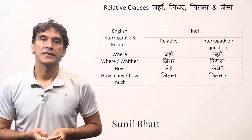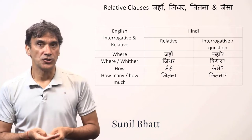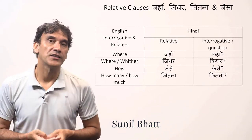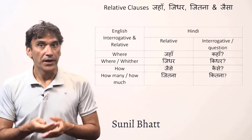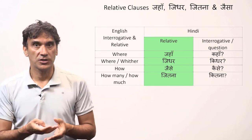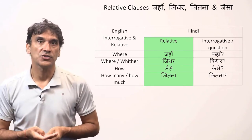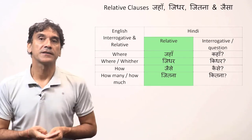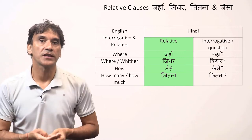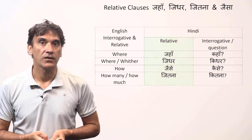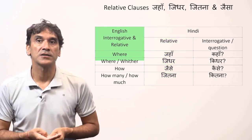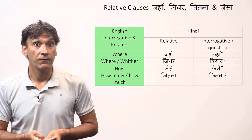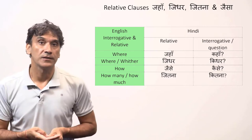Earlier we learned the relative clauses with jo, jis, jinn, and jab. Now we will learn jaha, jithar, jitna, and jaisa. These relative words — jaha, jithar, jitna, and jaisa — will be translated into English with the interrogative question words: where, whether.